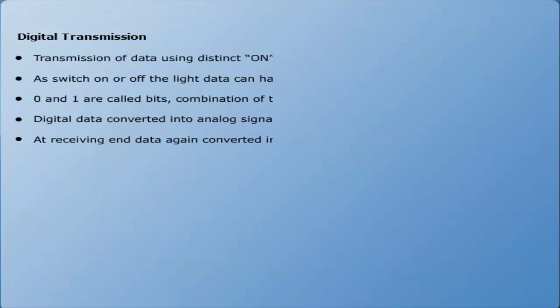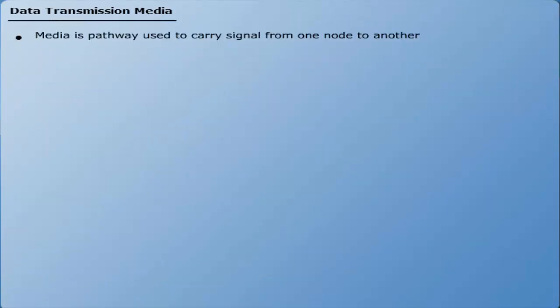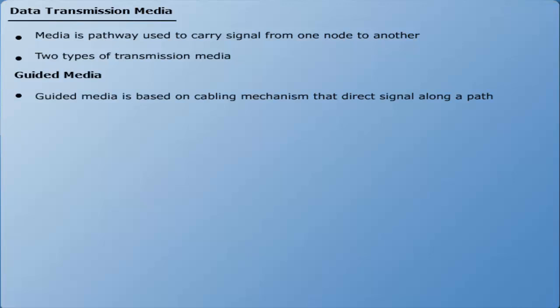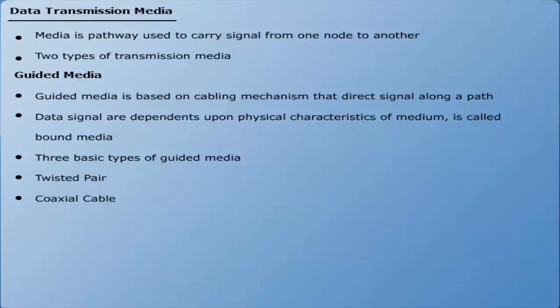Data transmission media is the pathway used to carry a communication signal from one node to another. There are two types: guided media and unguided media. Guided transmission media is based on a cabling mechanism that directs data signals along a specific path. The data signals depend on the physical characteristics of the medium — it is also called bound media. There are three basic types of guided media: twisted pair, coaxial cable, and optical fiber.